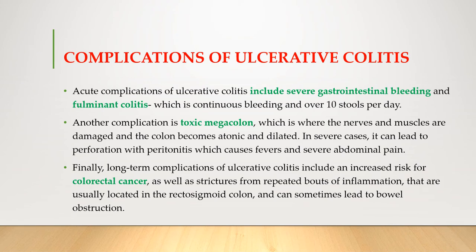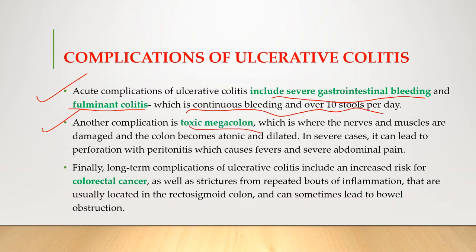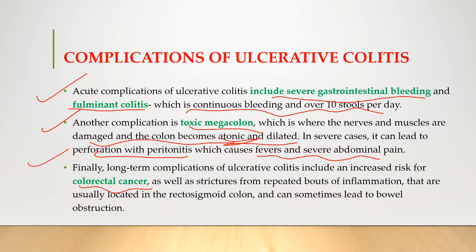Complications of ulcerative colitis: acute complications include severe gastrointestinal bleeding and fulminant colitis with continuous bleeding and over 10 stools per day. Another complication is toxic megacolon, where nerves and muscles are damaged and the colon becomes atonic and dilated, potentially leading to perforation with peritonitis causing fevers and severe abdominal pain. Long-term complications include increased risk for colorectal cancer and strictures in the rectosigmoid colon that can lead to bowel obstruction.